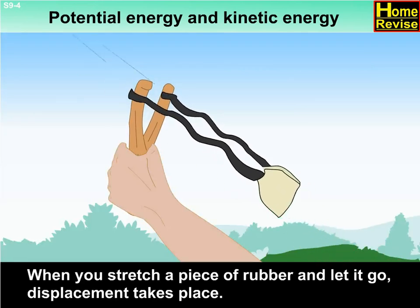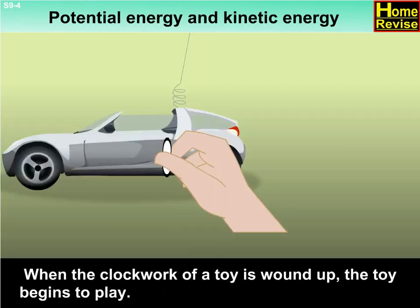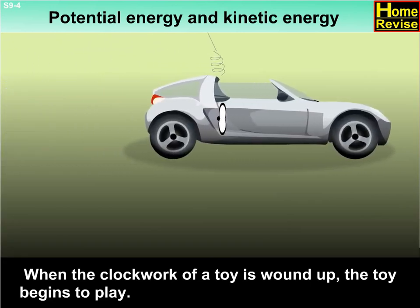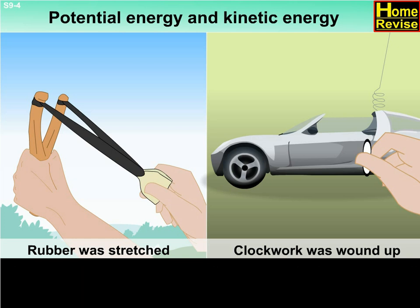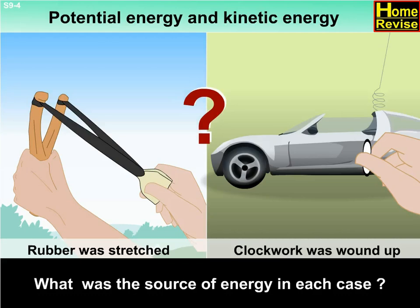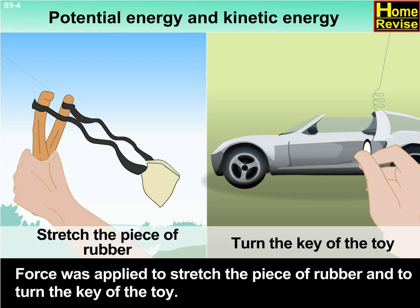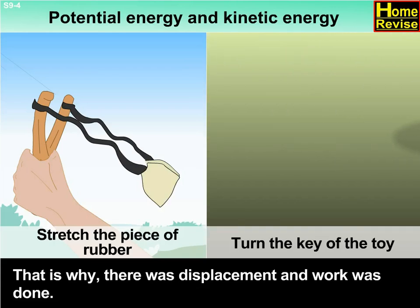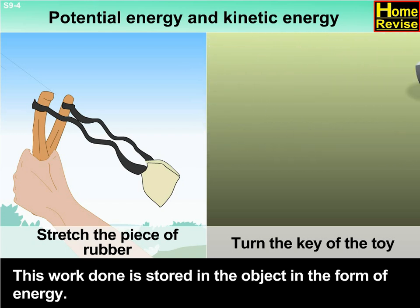When you stretch a piece of rubber and let it go, displacement takes place. When the clockwork of a toy is wound up, the toy begins to play. Work was done when the rubber was stretched as well as when the clockwork was wound up. Force was applied to stretch the piece of rubber and to turn the key of the toy — that is why there was displacement and work was done. This work done is stored in the object in the form of energy.